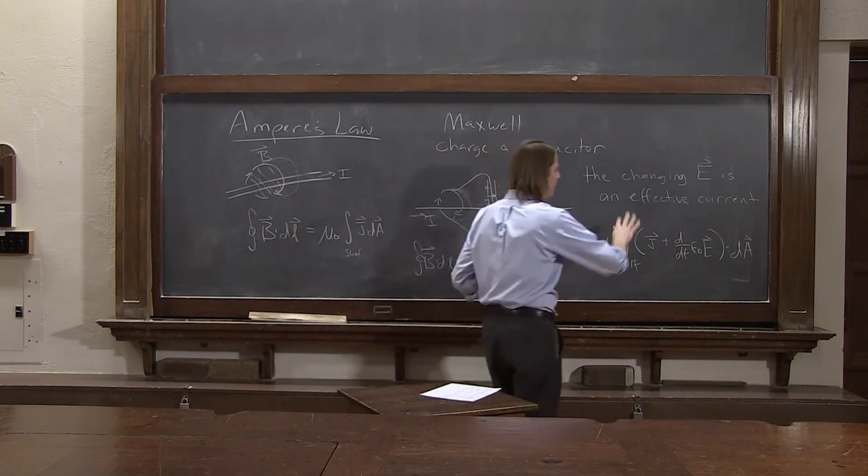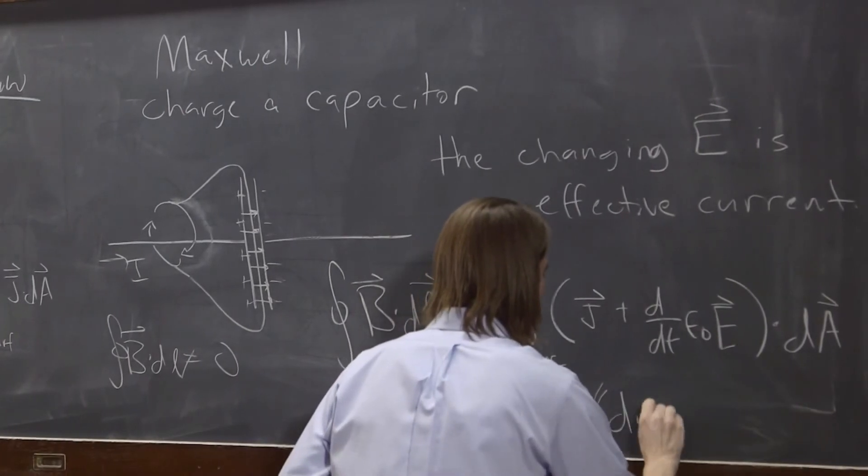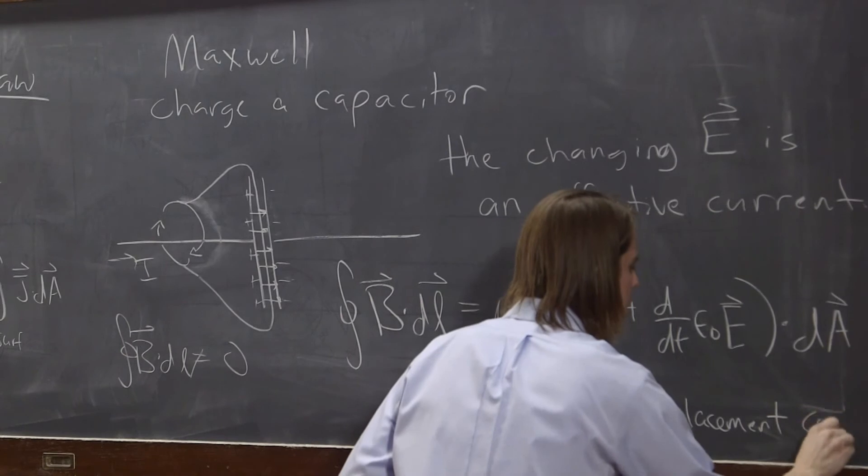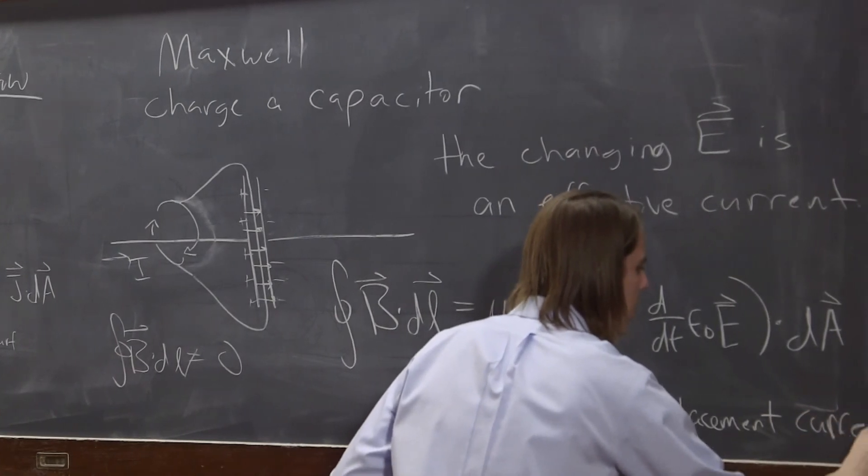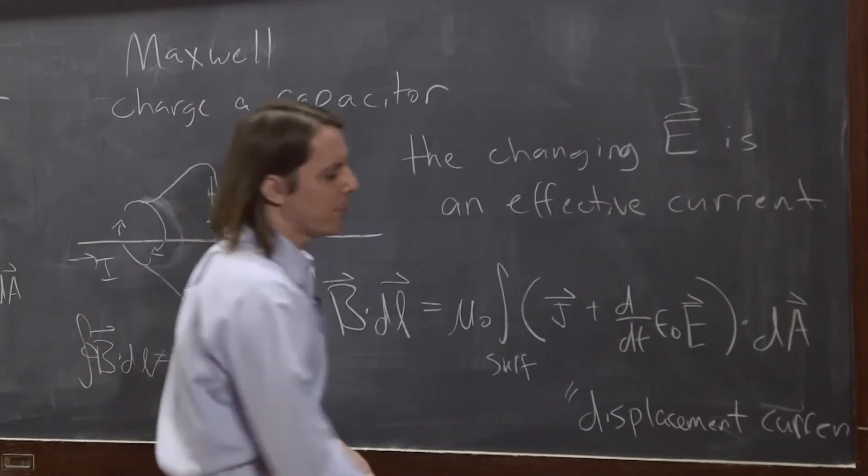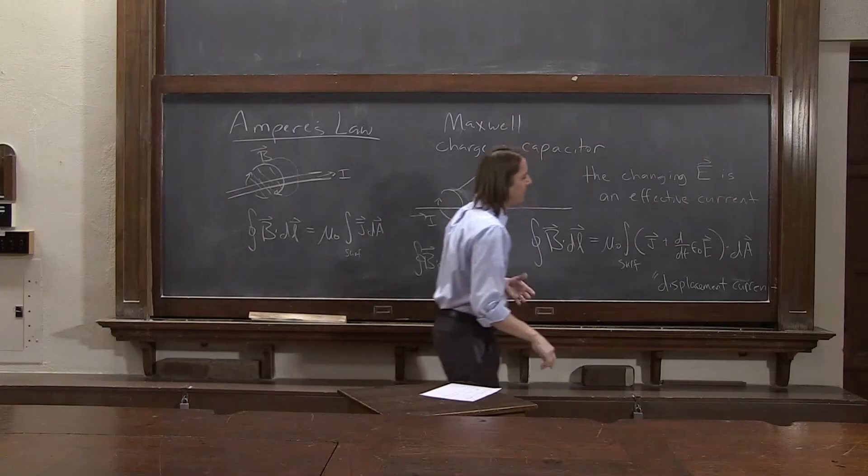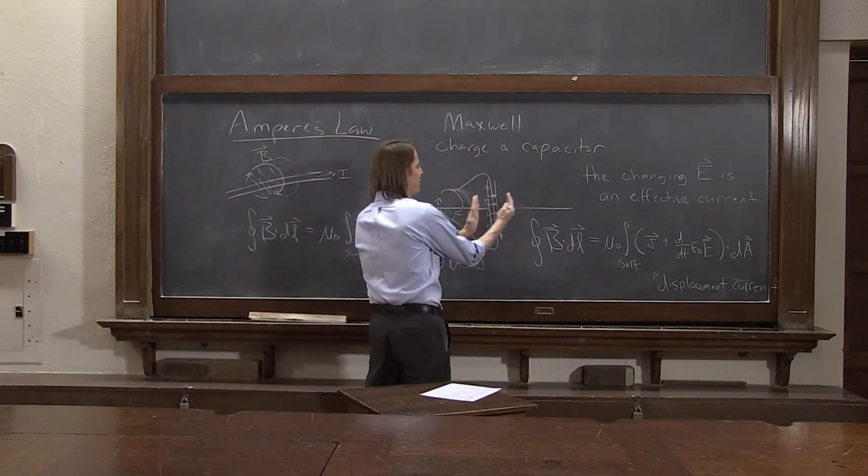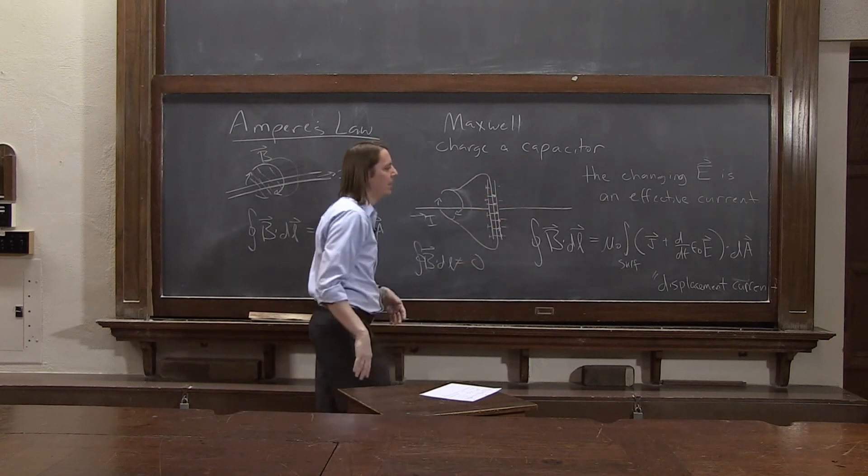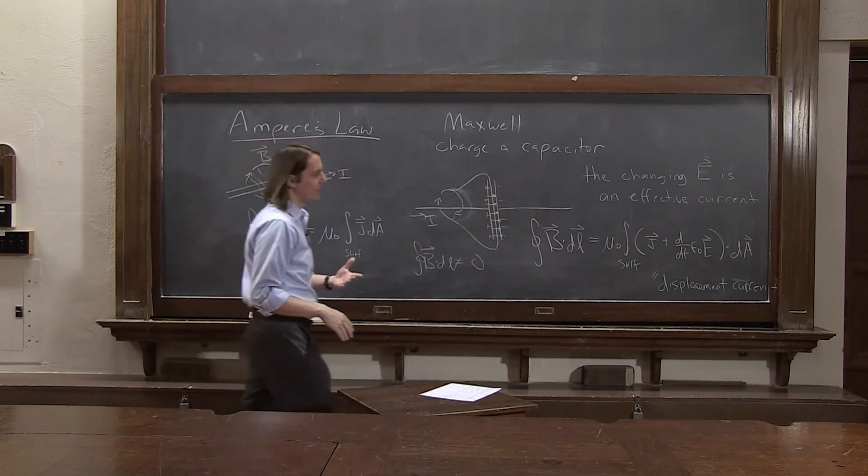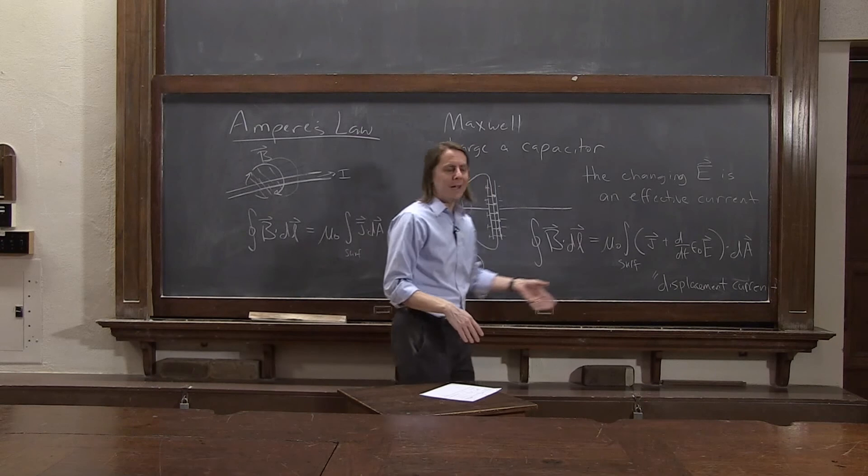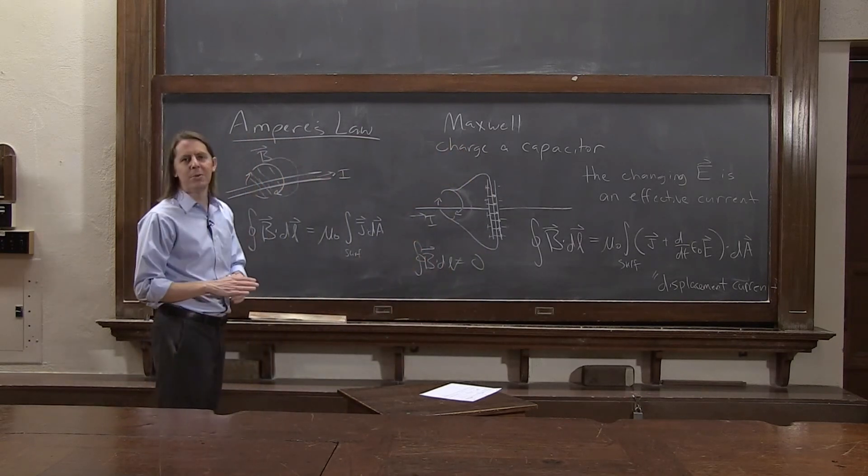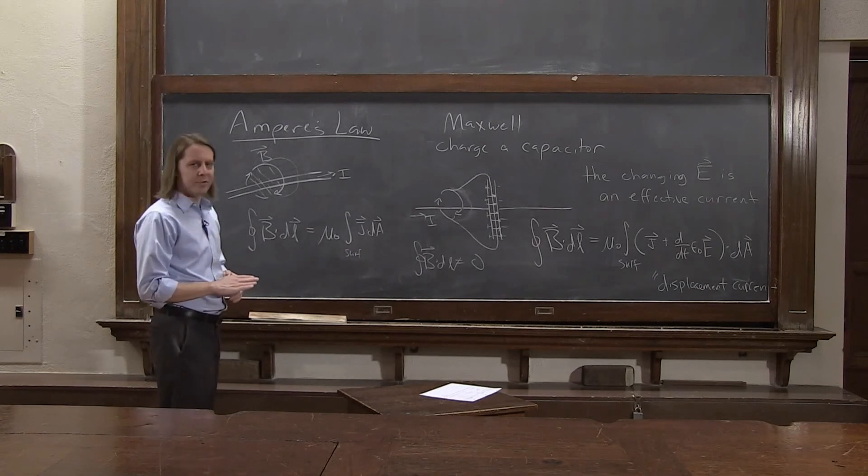And he called this not an effective current. He called it the displacement current. Displacement current. Some people don't like the name, but basically the idea is we don't have current, but we have charge being displaced, creating an electric field that effectively acts like a current in Ampere's Law. And this will make it, you can see, always be true. So the full name is the Ampere-Maxwell Law, because Maxwell came in and fixed it.